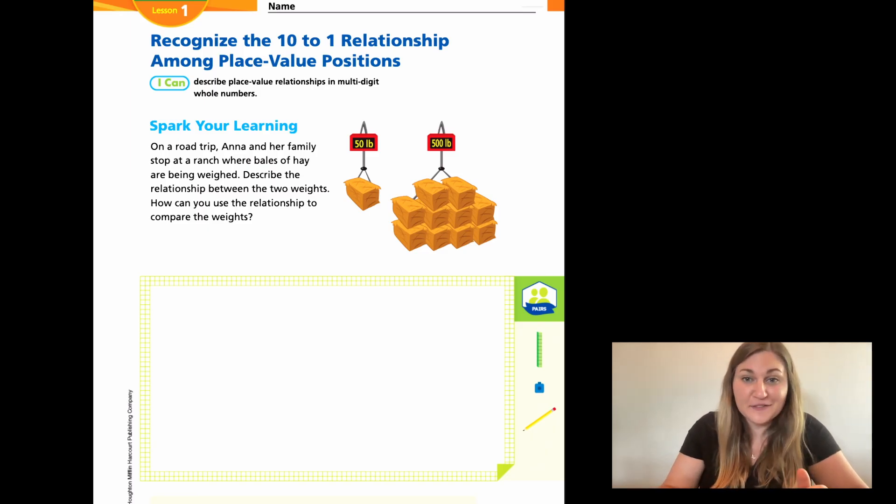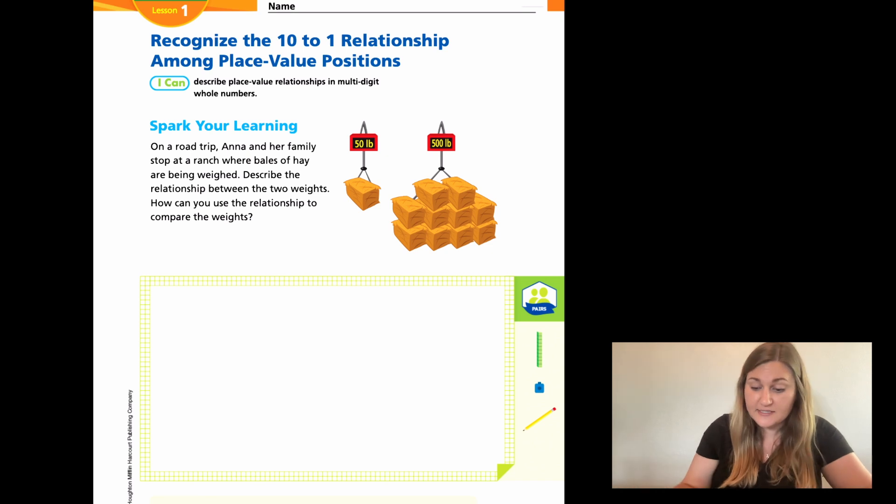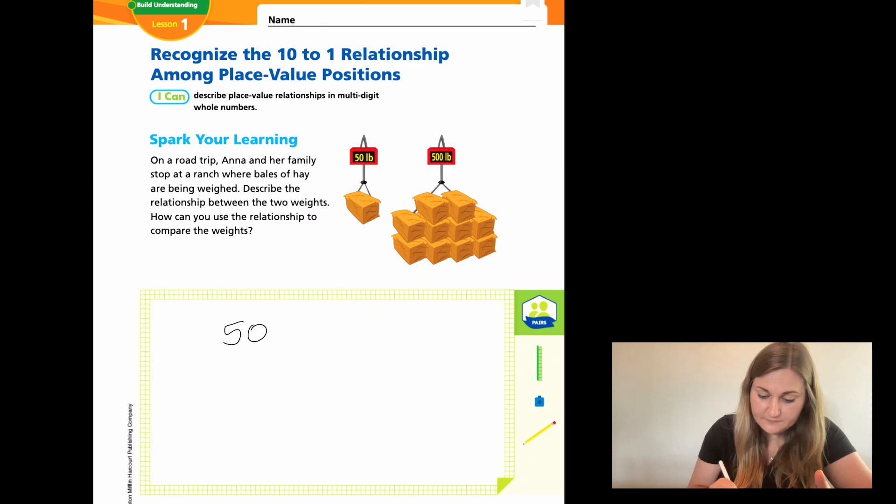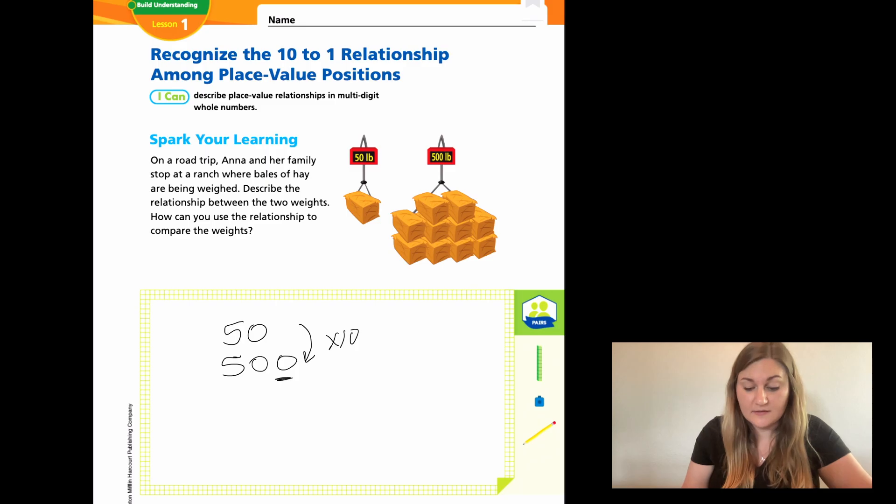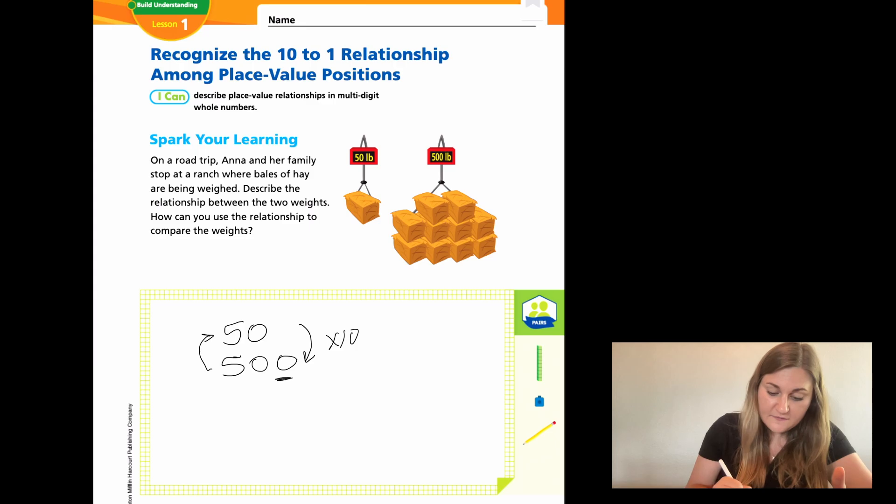Alright. Hopefully you got a chance to write down your understanding. What I would like to point out is that the difference between 50 and 500 is this one zero right here. So if I was saying that 50 to 500, I could say that's being multiplied by 10 to where the opposite is true. And I could say that if I go from 500 to 50, that size is one tenth of 500.